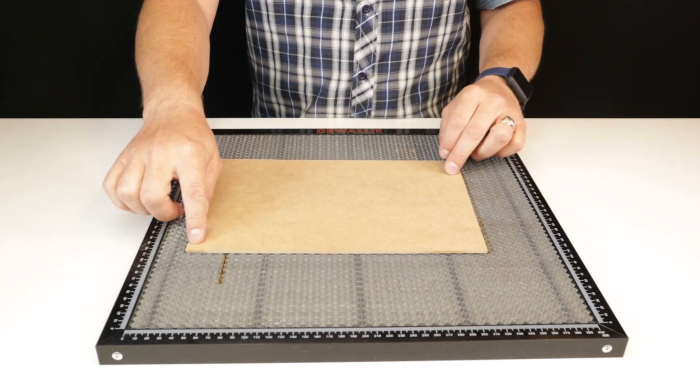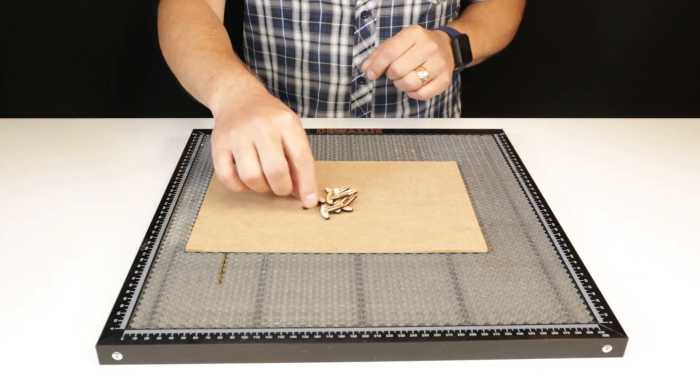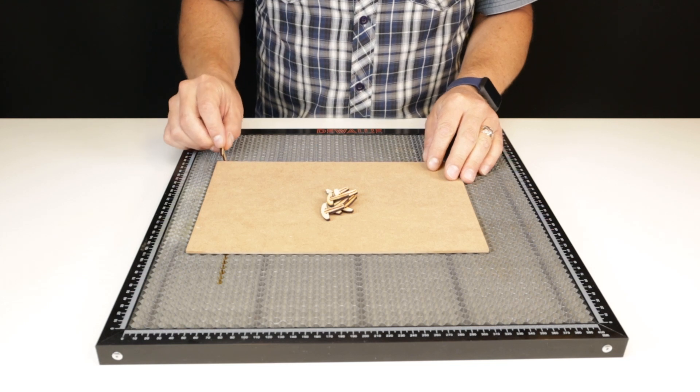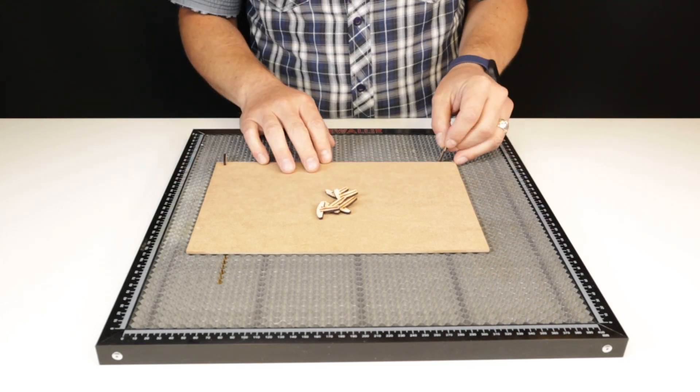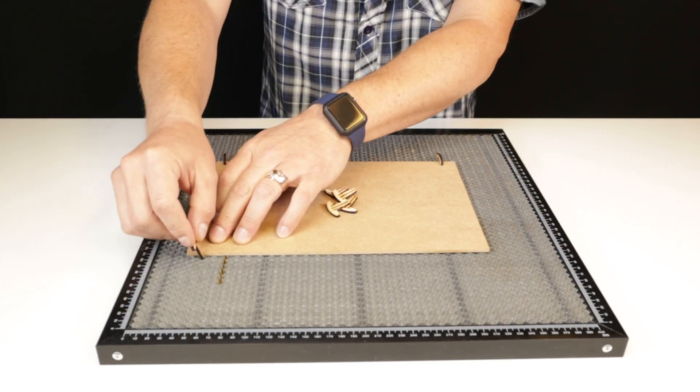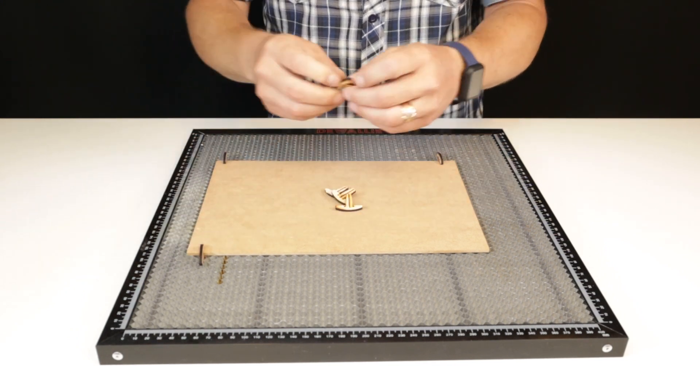The bed has a honeycomb recess designed to prevent laser reflection from damaging the laser during operation and the honeycomb working table comes with an aluminum plate which prevents the laser from damaging your desk.